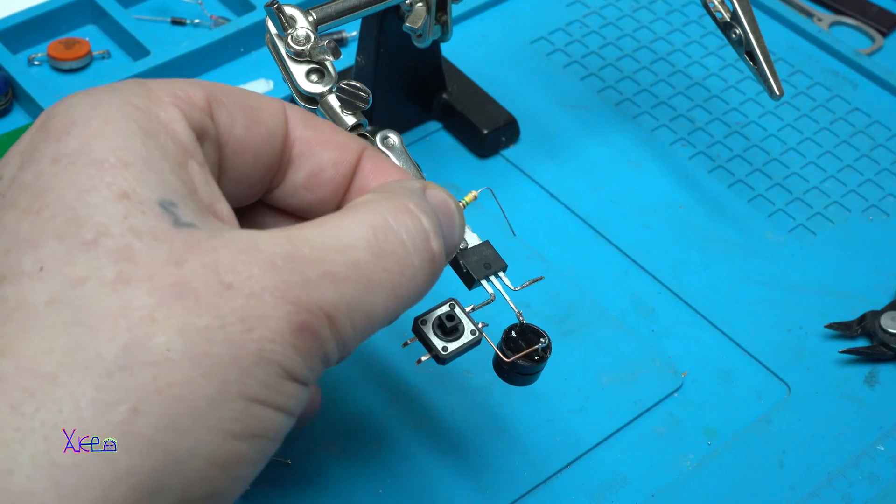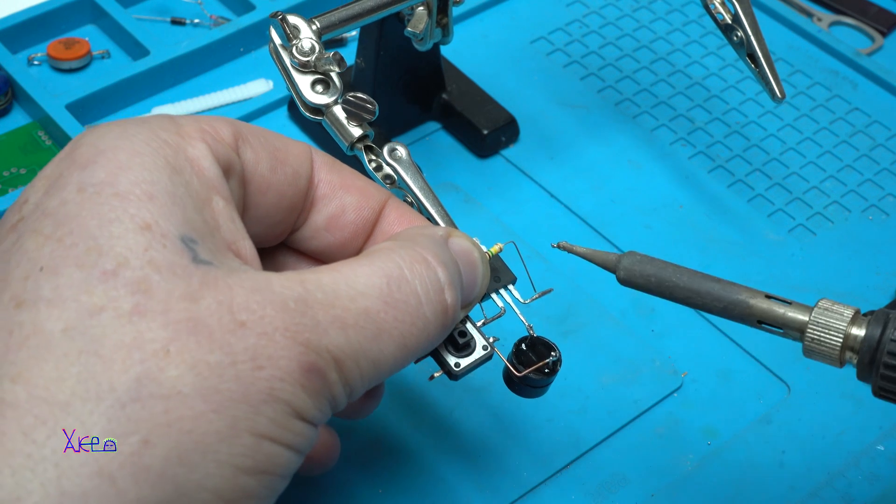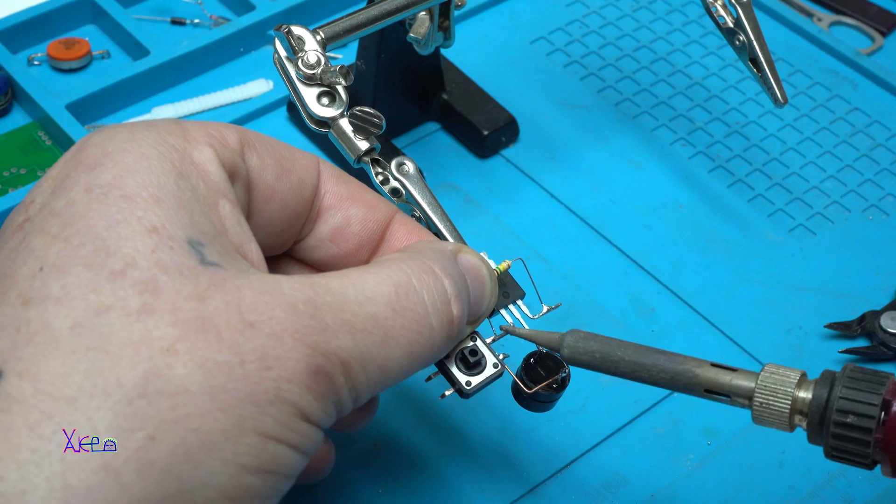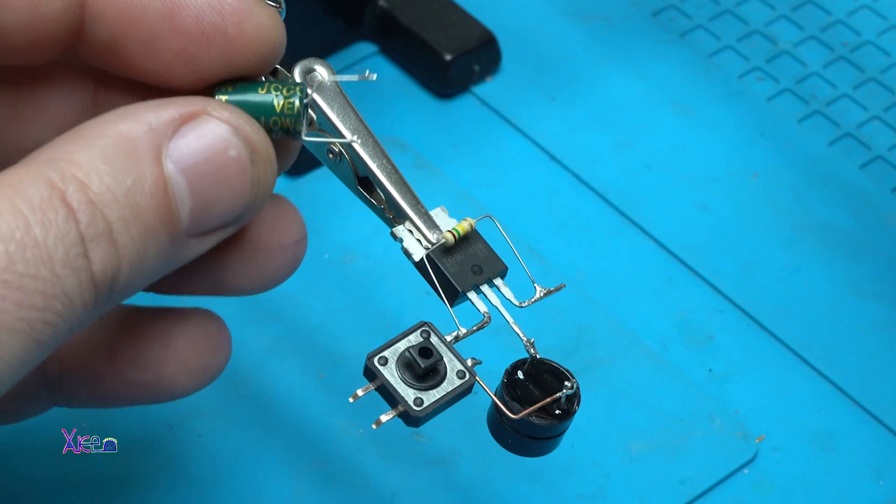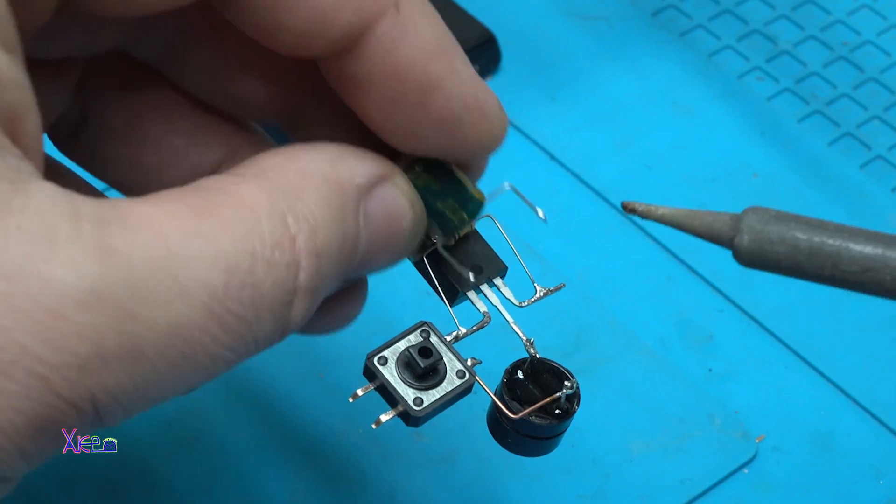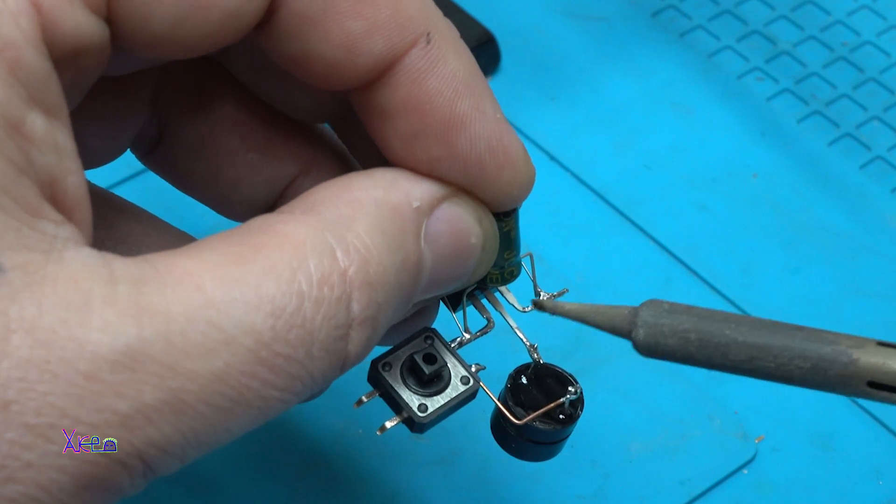Adding a 150 kilo-ohm resistor between gate and source. Soldering the electrolytic capacitor with positive side going on the gate and negative on the source of the MOSFET.